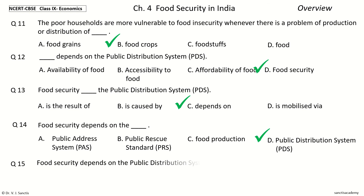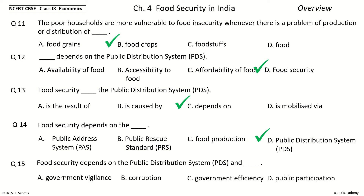Question 15: Food security depends on the Public Distribution System, PDS, and Dash. The options are Government Vigilance, Corruption, Government Efficiency, Public Participation. Your time to choose. And the answer is Government Vigilance. So, food security depends on the Public Distribution System, PDS, and Government Vigilance.